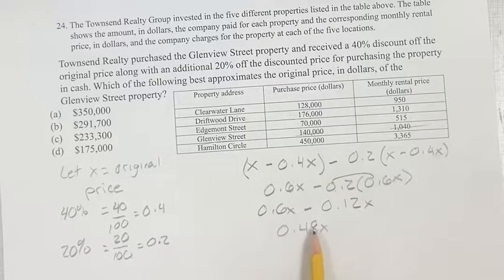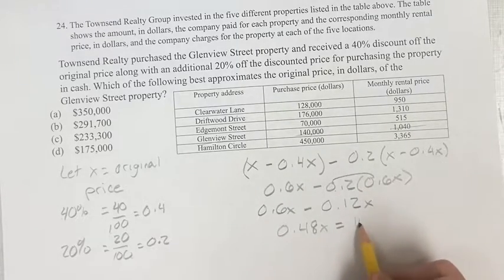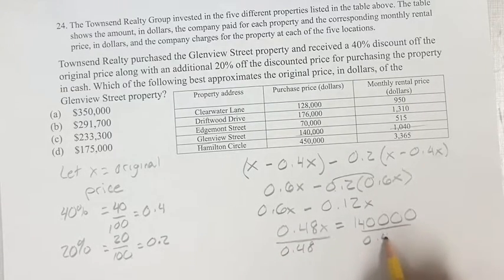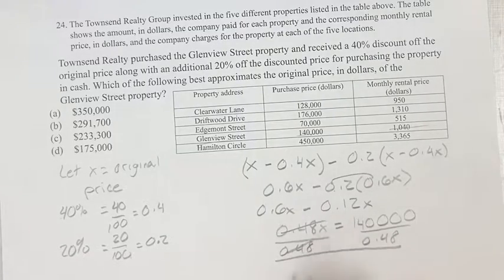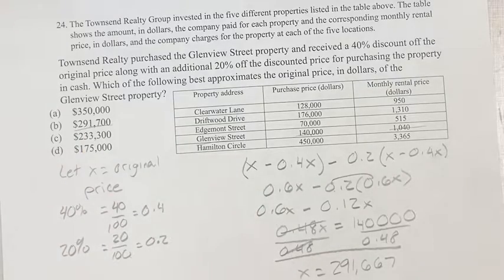So 0.48 times the original price is equal to what they paid for, which is $140,000. If we divide both sides by 0.48, this cancels out and we just get x. Plugging this into your calculator, you get $291,667, which is approximated by answer choice B, $291,700. So B is going to be your final answer.